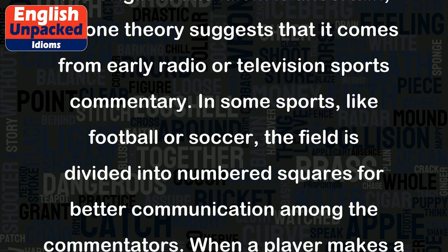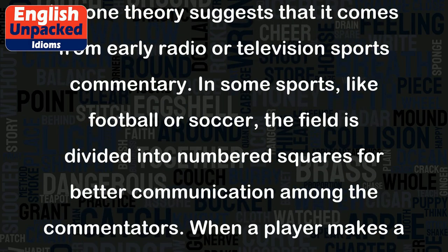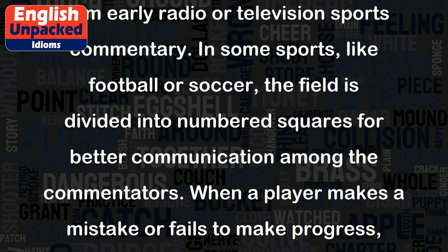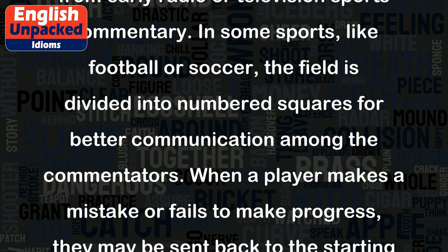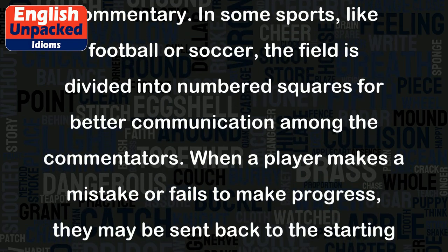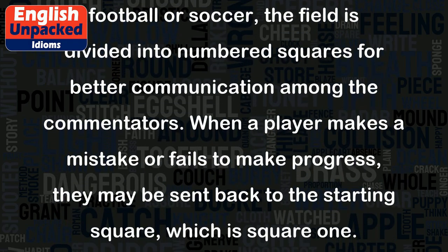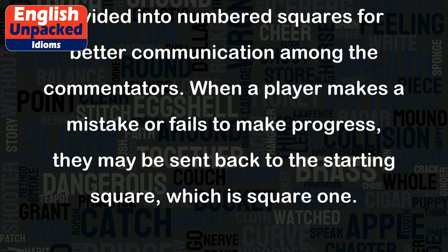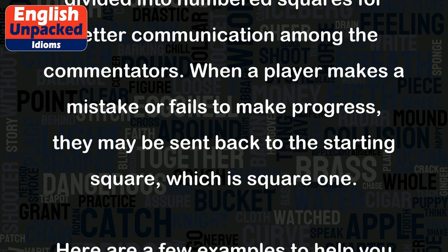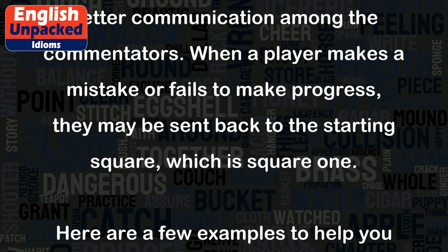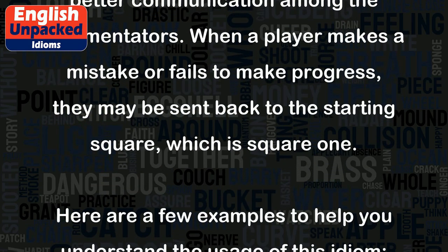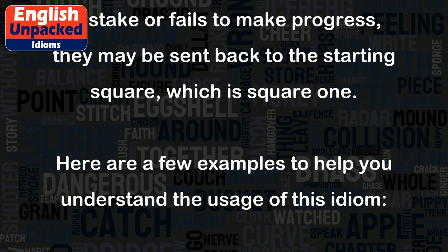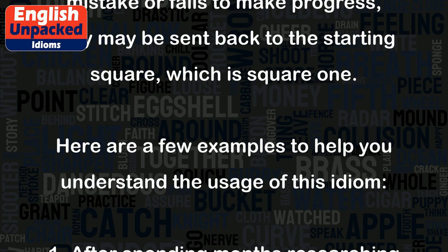In some sports, like football or soccer, the field is divided into numbered squares for better communication among the commentators. When a player makes a mistake or fails to make progress, they may be sent back to the starting square, which is square one.